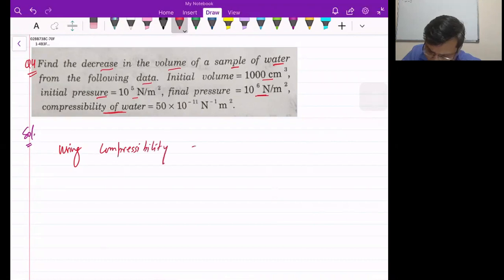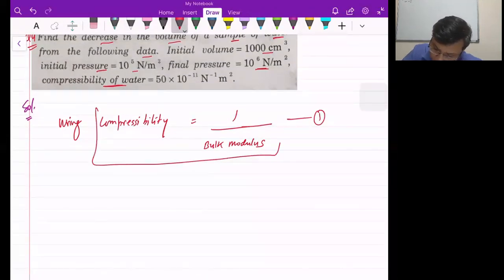As compressibility is the reciprocal of bulk modulus. Okay, one thing is the other thing. The other thing is bulk modulus.